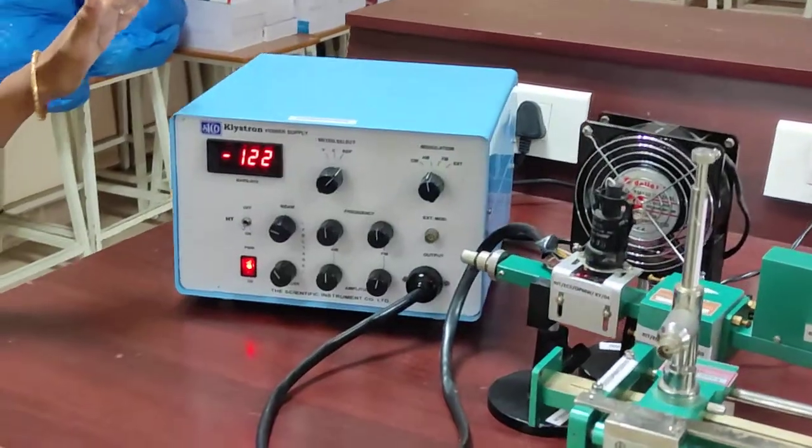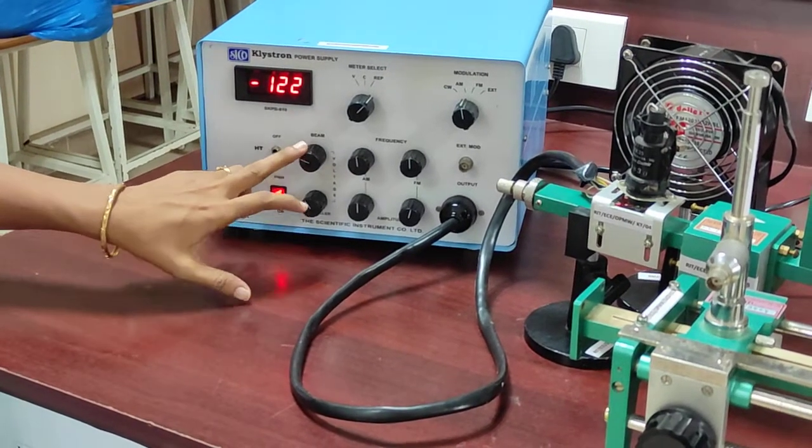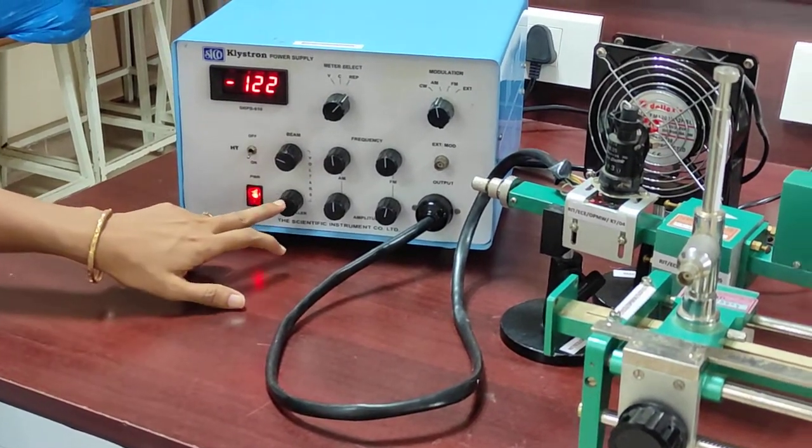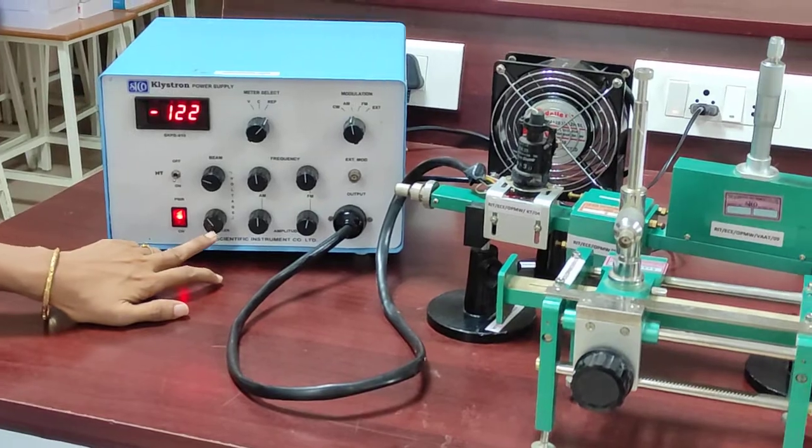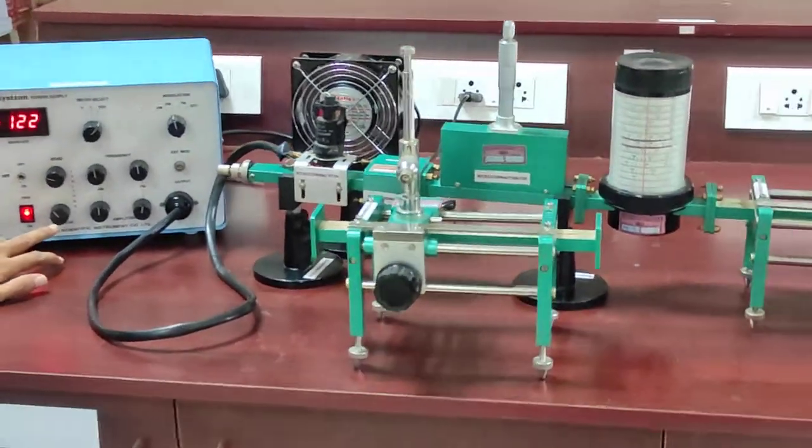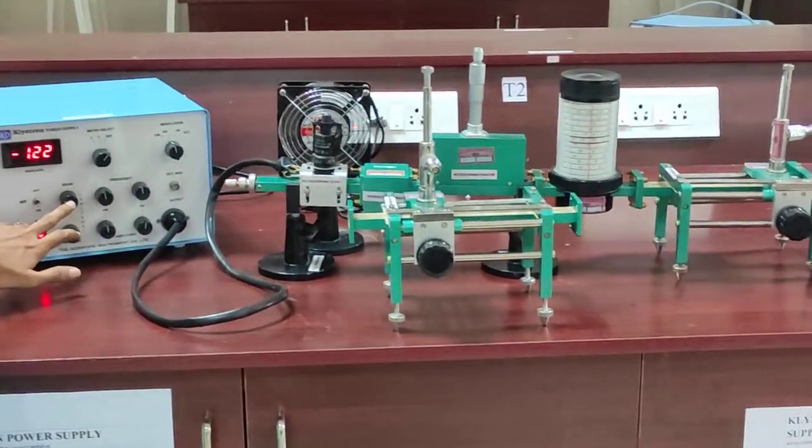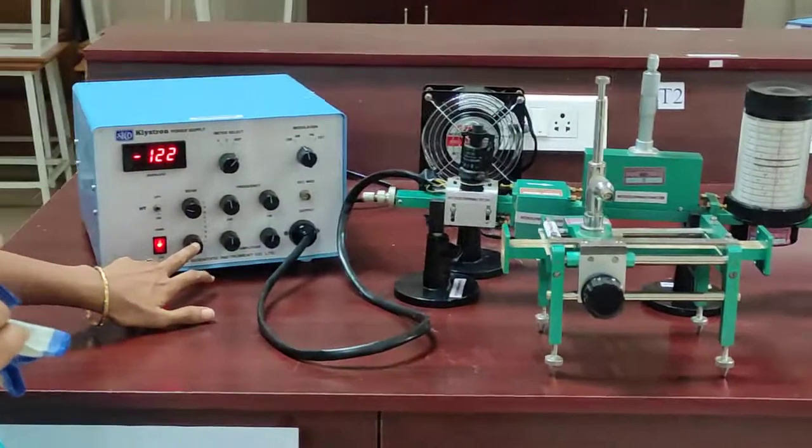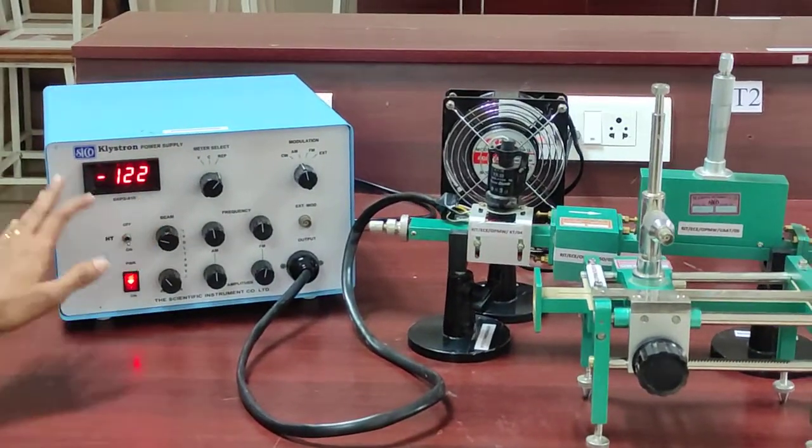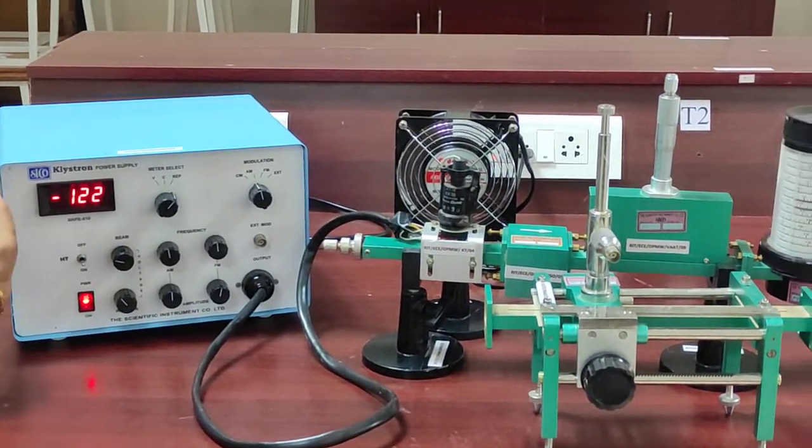I am repeating, you have to keep this beam voltage as a minimum one and repeller voltage as a maximum one. In the previous video also, I have mentioned you again and again. So beam voltage should be in minimum position, repeller voltage should be in maximum position. You have to make the arrangements like that.